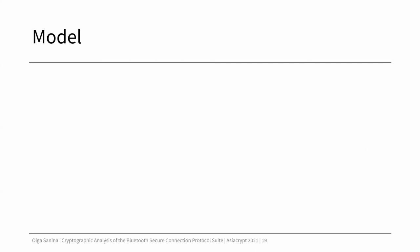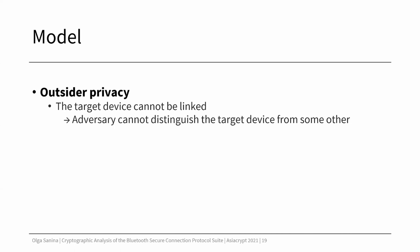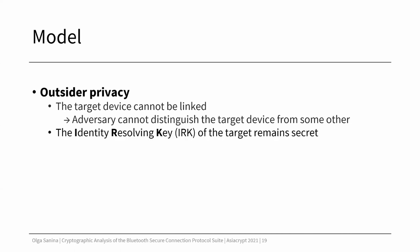We also used a game-based model for the analysis of privacy. Here we aimed for the property which we called outsider privacy. Intuitively, it means that the adversary cannot link the target device — that is, he cannot distinguish the target device from some other identical device. Second, it also means that the identity-resolving key of the target remains secret. We make the adversary passive and model his behavior by giving him access only to the test oracle, which gives back the transcript between a device and either the target or some other device.